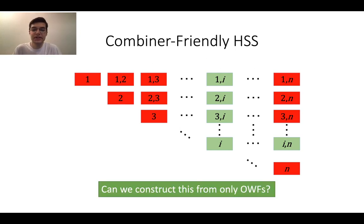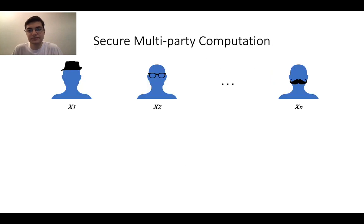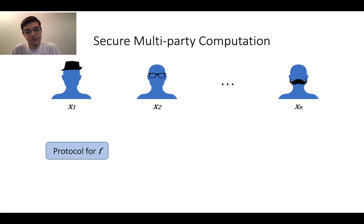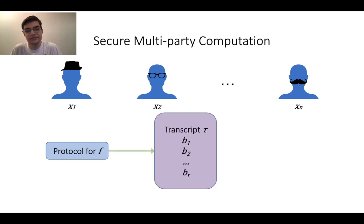Our question is: can we construct this combiner-friendly HSS from only one-way functions? To do this, we turn to secure multiparty computation. In MPC, many parties each possess some private input and want to compute some function f on their joint inputs. They execute some protocol for f, which generates a transcript, and using the transcript they recover f on all their joint inputs.